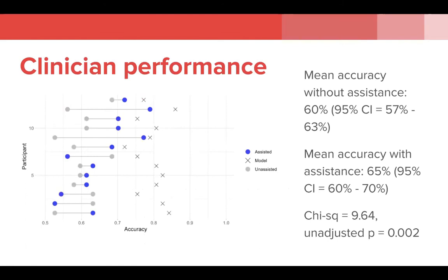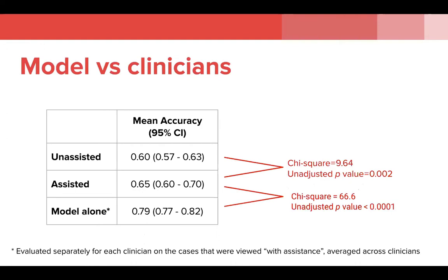Here we have a raw plot of physicians' accuracy with and without the model's assistance, along with the model's accuracy on the same randomly selected test cases. The model's accuracy varies between participants because we plotted the model's accuracy on the cases each participant viewed with model assistance, not an average accuracy on the test set. When we look at mean performance across clinicians, they overall performed better when able to see the model's output. Our primary outcome, accuracy, reached statistical significance according to the mixed effects model likelihood ratio test when comparing assisted to unassisted clinicians. However, the increase from 60 to 65% is of questionable clinical significance.